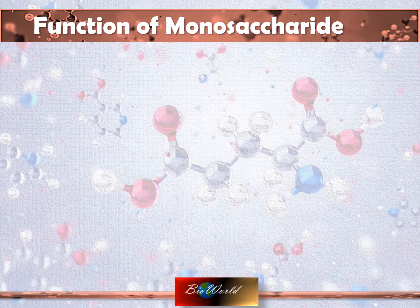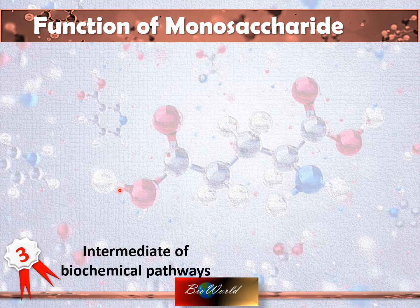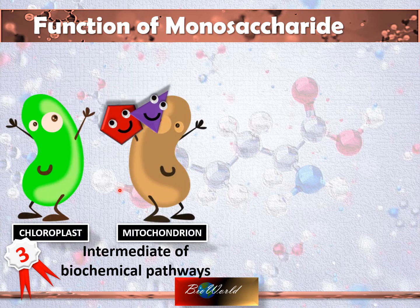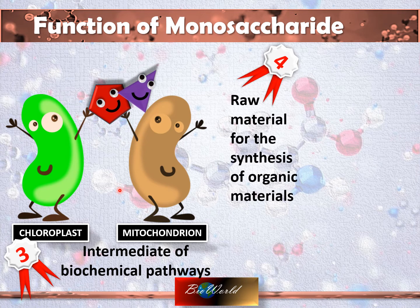The third function of monosaccharides is as intermediates of biochemical pathways. This can include monosaccharides from the class of pentose and triose. Organelles like chloroplasts and mitochondria use these sugars in the biochemical pathways of photosynthesis as well as respiration. The fourth function is as raw material for other organic materials, for example, nucleic acid.